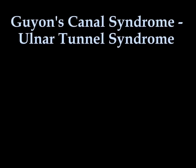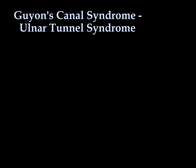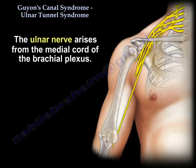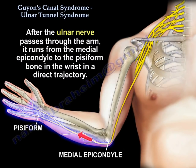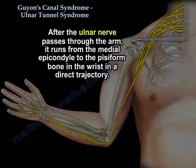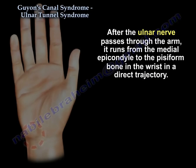Guyon's Canal Syndrome, also called Ulnar Tunnel Syndrome. The ulnar nerve arises from the medial cord of the brachial plexus. After the ulnar nerve passes through the arm, it runs from the medial epicondyle to the pisiform bone in the wrist in a direct trajectory.